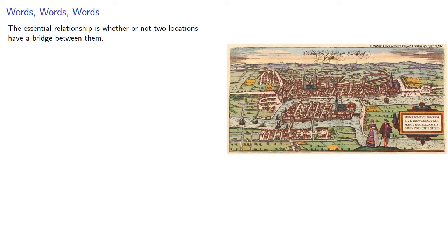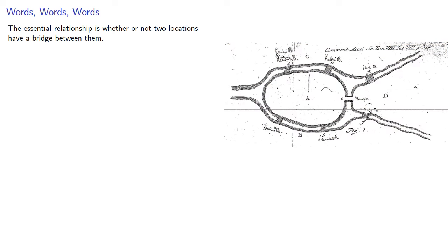The first step is realizing that the essential relationship is whether or not two locations have a bridge between them. So we can reduce the complexities of the map of Königsberg down to its essentials, and we can simply label the locations A, B, C, and D.